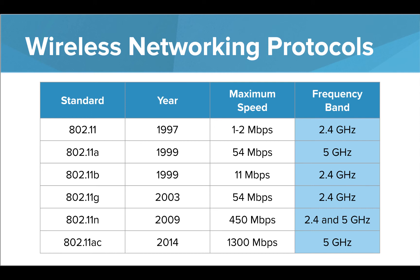Did you notice the two different frequency bands? In short, the higher the frequency, the faster the speed, but the shorter the signal range. So if you're very close to the signal, the higher frequency band of 5.0 gigahertz would provide better speeds. But if you're looking for a signal that travels a greater distance, then the 2.4 gigahertz band would be better.